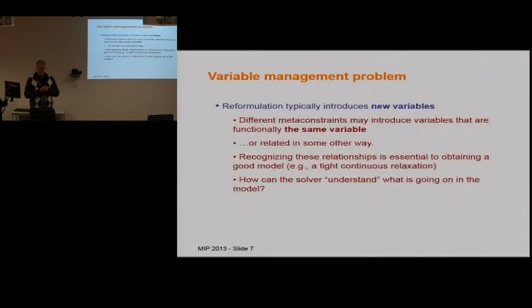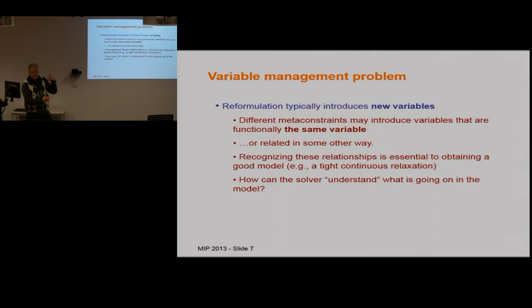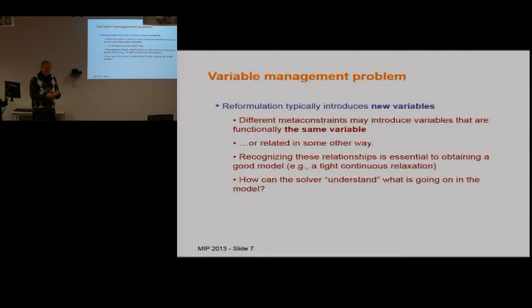This poses a fundamental problem of variable management, which we encountered when developing our integrated solver called SIMDL. If you have a number of high-level constraints — global constraints, meta constraints — when these are transformed into a model appropriate to the solver, you usually introduce new auxiliary variables. Two different constraints may introduce variables that are actually the same variable or related in some other way. How does the solver know that? You have to know that, particularly for a relaxation, which will be too weak unless you can identify or relate these closely related variables.